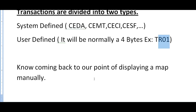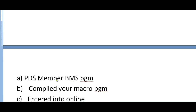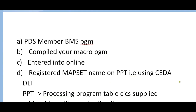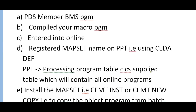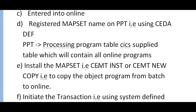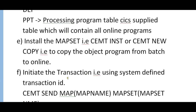Coming back to displaying a map manually — to recap: I assume you have created the PDS member, written your BMS macro program, compiled it, and loaded it into a load library. You have entered the online screen, and you have registered your mapset using the CEDA definition command (DEF command) into the Processing Program Table (PPT), which contains all online programs. Then you install your mapset using CMSD INSTALL or CMSD NEWCOPY — to copy the object program from the batch to online.